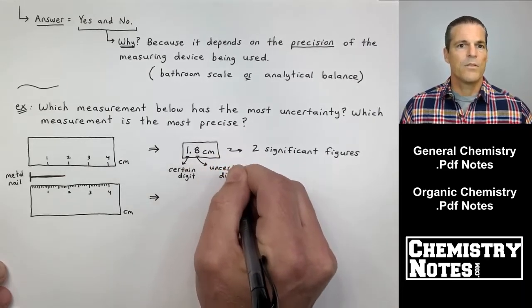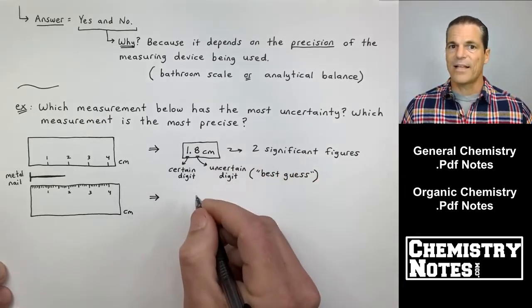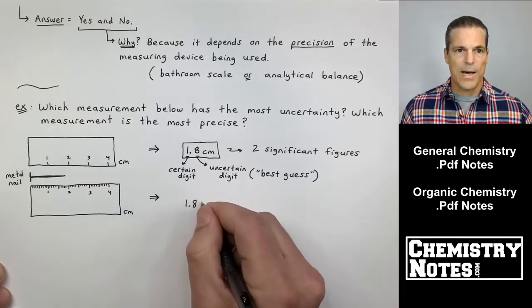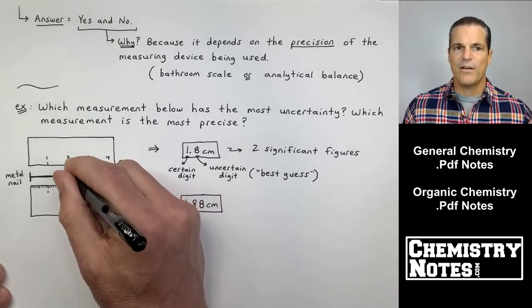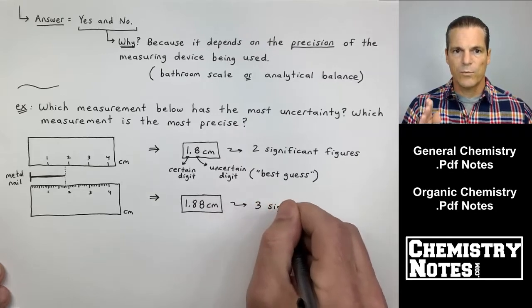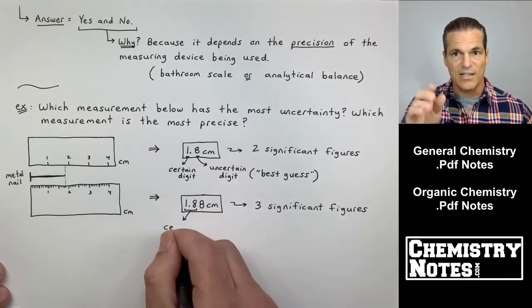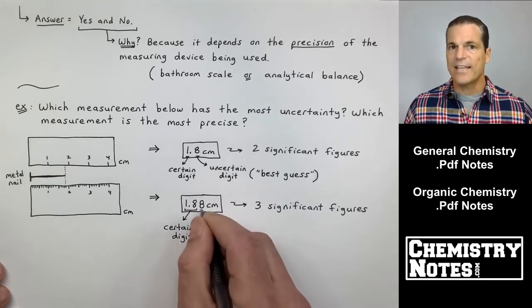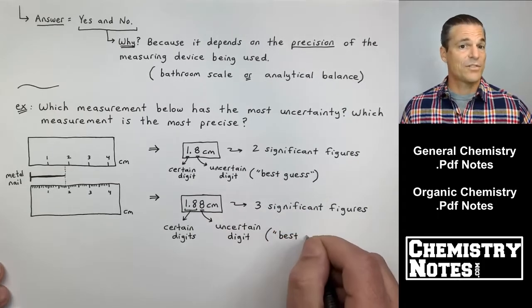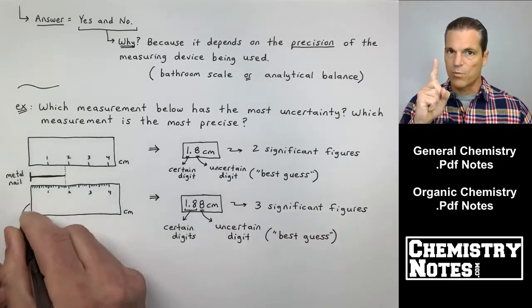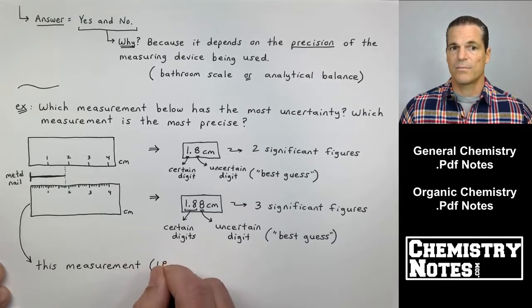The one was my certain digit. There was no guessing with that one. The 0.8, that's my best guess. That's my uncertain digit. Now, look at the bottom ruler. I know it's very tight, but trust me, if you get really, really close up, the end of that nail is for sure in between 1.8 and 1.9. And the 1.8 and the 1.9 are tick marks. They are there. I can see them. They're tiny little ticks. And then the second eight there is my guess. I guessed it was closer to 1.9 than 1.8. So, now I have two certain digits instead of one, but I always have just one uncertain digit. One best guess. So, this guy, 1.88 centimeters, this is three significant figures.